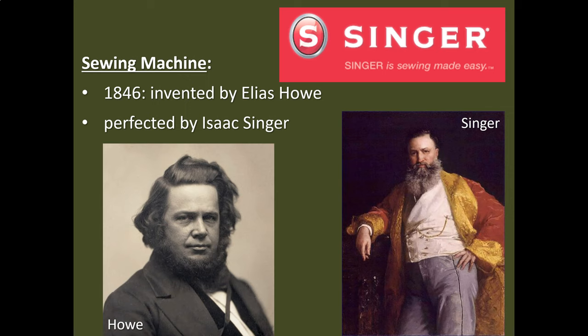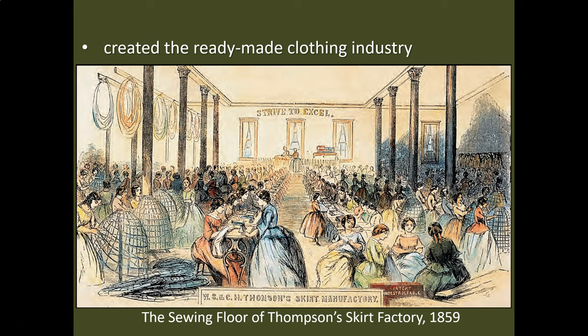In 1846, Elias Howe and later Isaac Singer develop the modern sewing machine. I know that doesn't sound very exciting, but this is a huge deal — because before this time, people would purchase cloth and make their own clothing at home. Now, this is going to allow what we call the ready-made clothing industry, where you would go to the store and purchase ready-made clothing. And later, during the Civil War, standardized sizes will come online. If you look at the workers shown here, notice they're using sewing machines and making the famous crinoline dresses, those big hoop dresses that were so popular in the mid-1800s both in America and Europe.